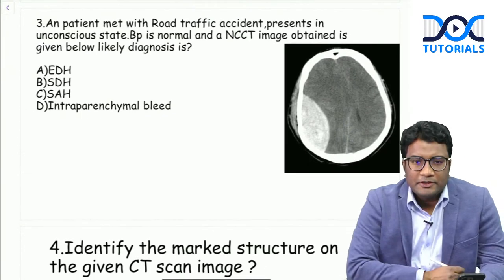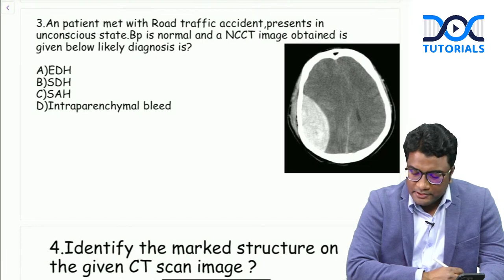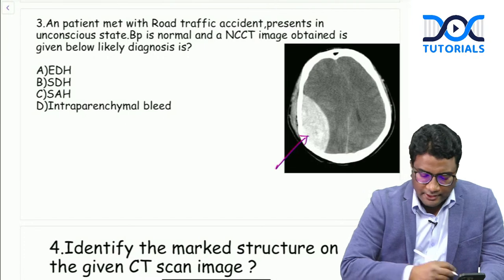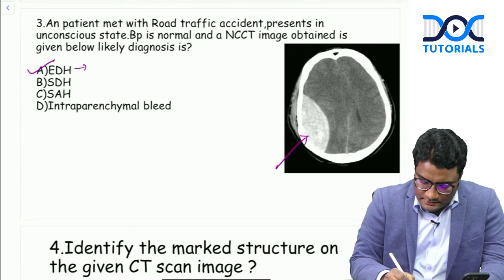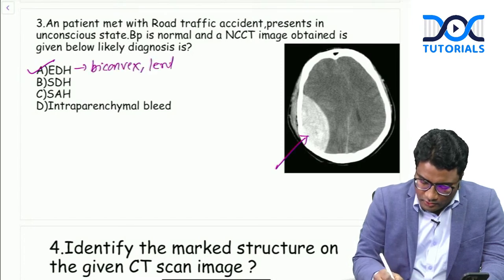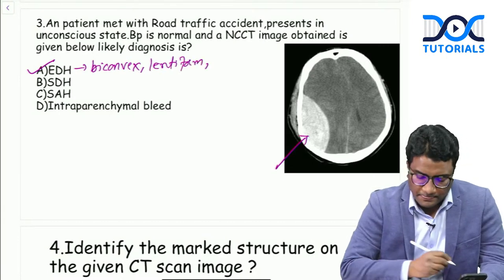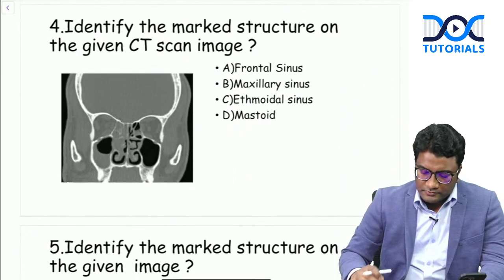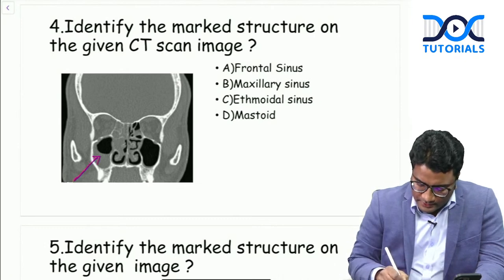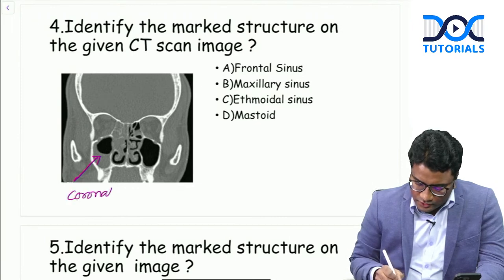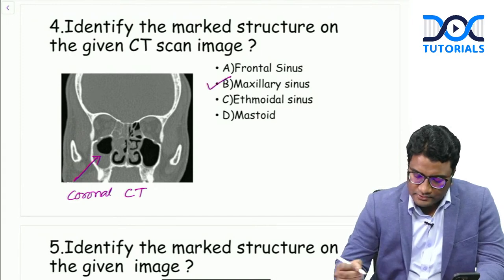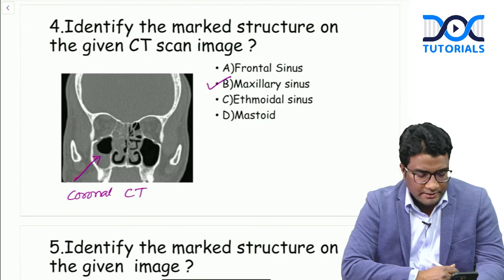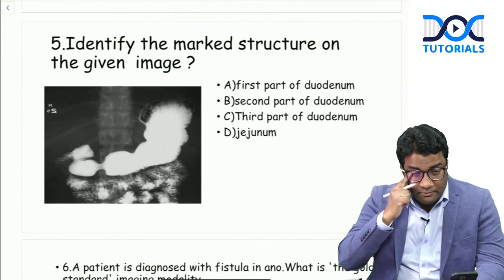A patient met with a road traffic accident and is in an unconscious state with normal blood pressure. A non-contrast CT image was obtained - the diagnosis is epidural hematoma. It is biconvex/lentiform and does not cross sutures. There was also a question asking you to identify a marked structure on a coronal CT scan - that was the maxillary sinus, with mucosal thickening suggesting maxillary sinusitis. The arrow was given near the maxillary sinus.